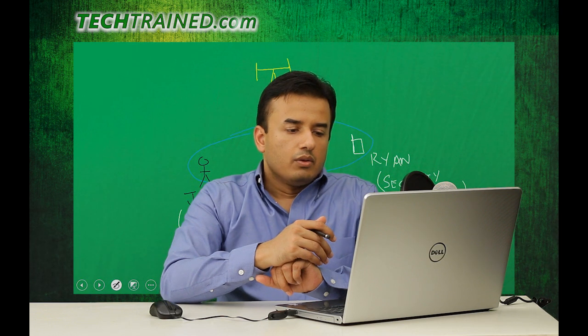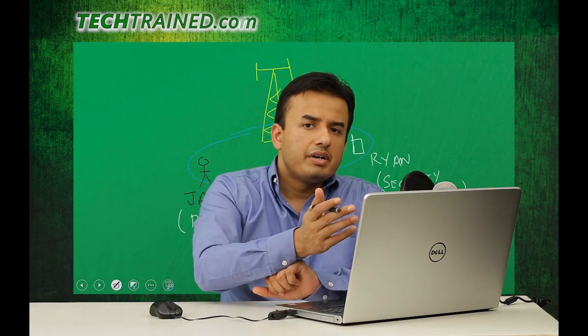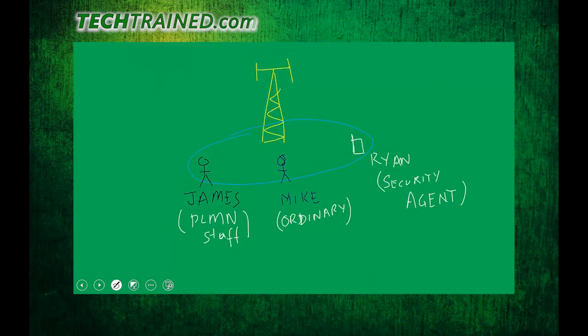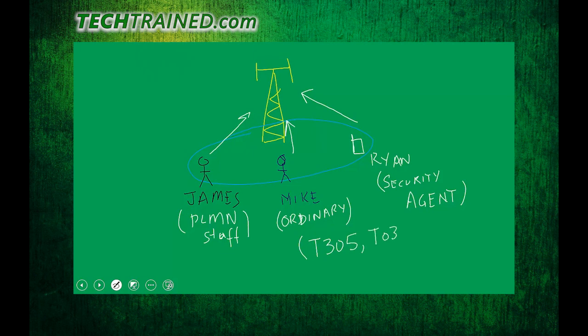The system gives preference to specific subscribers — in this case James and Ryan. This is managed using timers T305 and T307. It does not mean that ordinary user Mike will not be able to access the network; rather, Mike will have to make an attempt later after James and Ryan get connected. If all three are making access attempts, James and Ryan may get access right away whereas Mike's UE will have to wait for a certain amount of time.